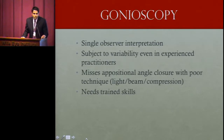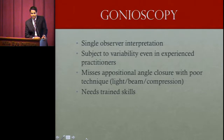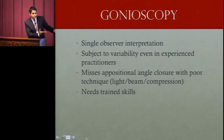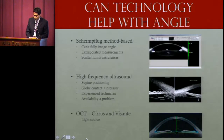When using gonioscopy to screen high-risk populations who might not have access to care, some issues are that it involves a single experienced observer, there is variability even among experienced practitioners in interpreting semi-quantitative findings, it can miss appositional closure with poor technique, and it does require trained skills — raising the question of what happens when someone with less experience is required to perform gonioscopy.